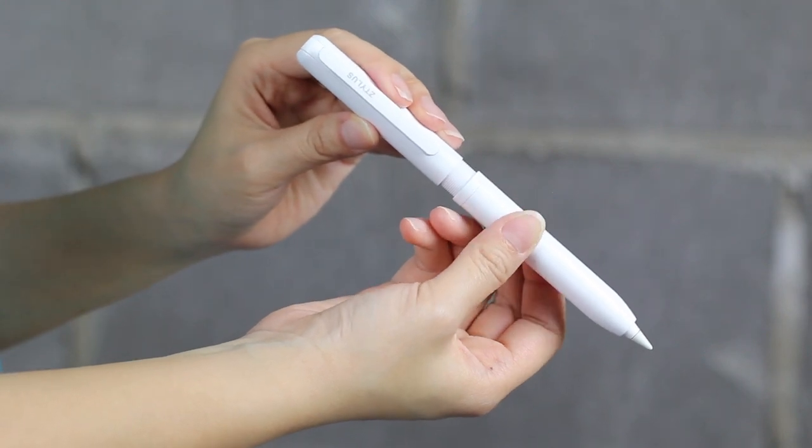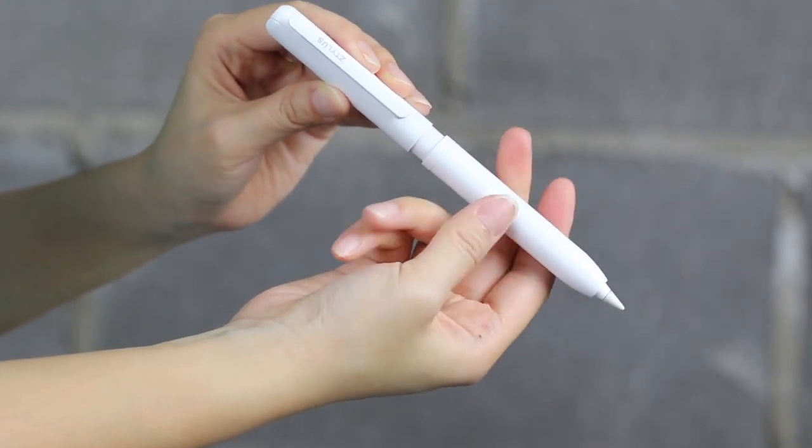Once it's locked in, take the top half of the case and twist it clockwise to secure the pencil.